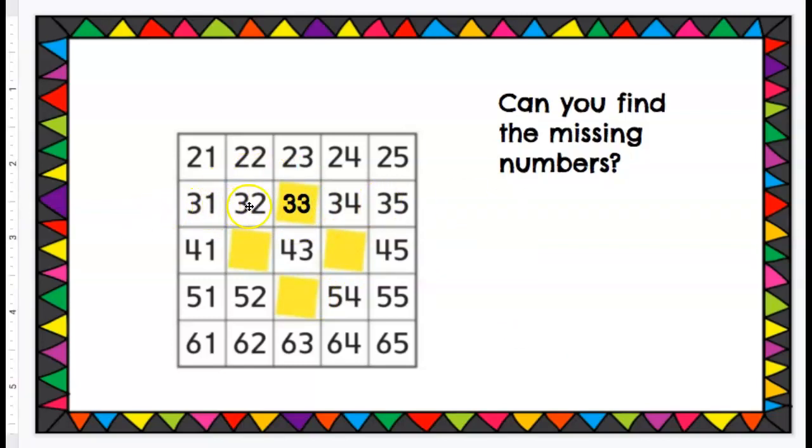These are all 30s, 31, 32, 33, oh that works, right? 34, 35, and when we are going down here, remember we are traveling by tens.